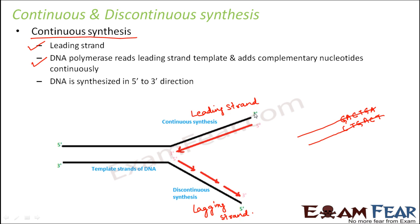Since this is the three-prime end of the template strand, the new strand will have a five-prime end here, because the two strands must be anti-parallel and complementary to each other. DNA is synthesized in the five-prime to three-prime direction. The red arrow denotes the direction of DNA synthesis, so DNA is synthesized from five-prime to three-prime direction.